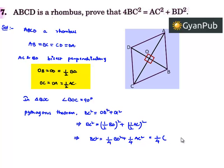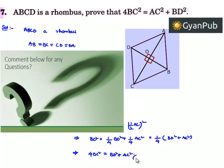Taking ¼ common, we get BC² = ¼(BD² + AC²). Transposing ¼ to the left-hand side, we get 4BC² = BD² + AC². This completes the required proof.